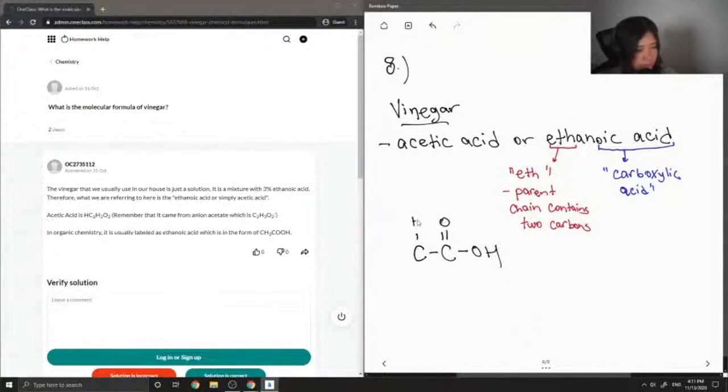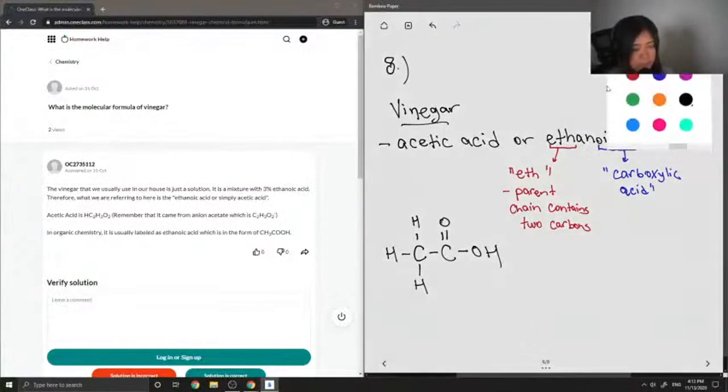And then since carbon needs four bonds, I drew out three bonds to hydrogen and the other carbon. Okay, so this is the structure of acetic acid.